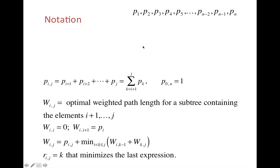Now let's think about how to do this in general. We have n elements, each with a probability. We define some notation. pij is the probability of all elements from i+1 to j. So for instance, p15 would be the sum of these probabilities here.